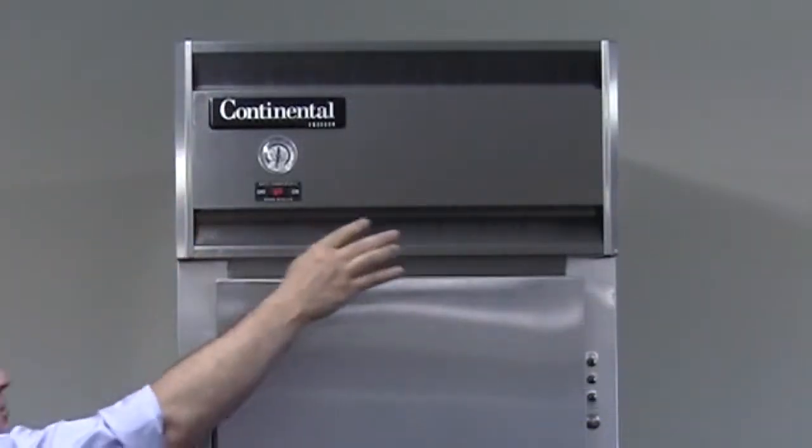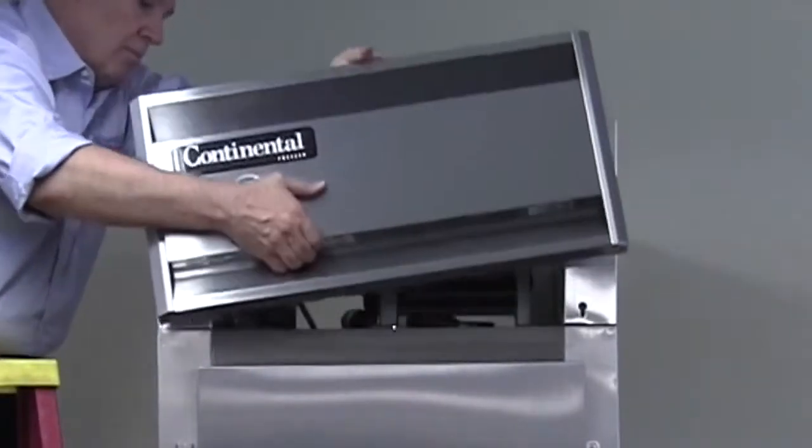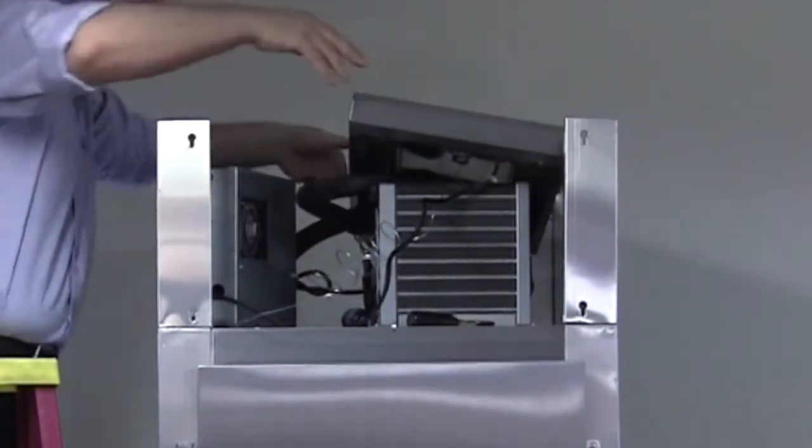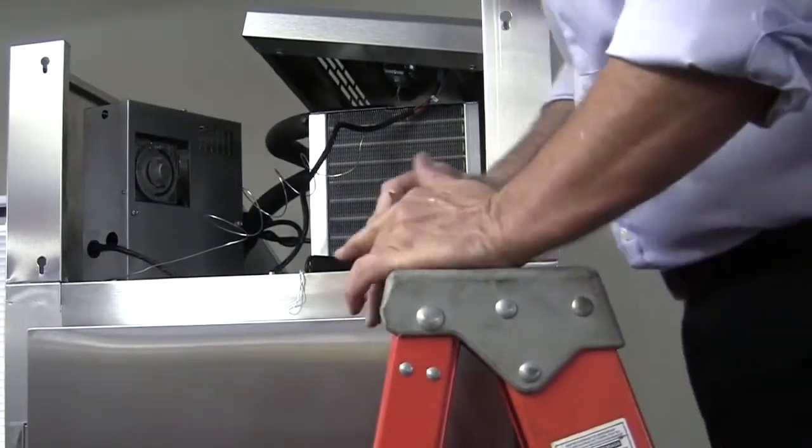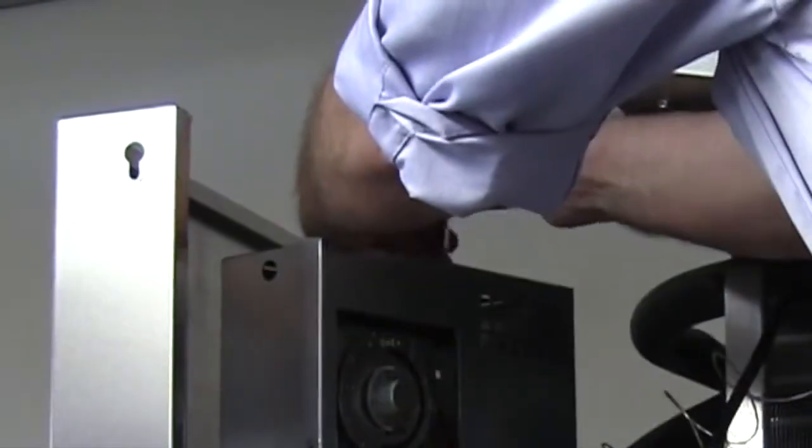Locate the four Phillips screws behind the front grill. Take the small Phillips screwdriver, loosen and lift out of the keyhole slots, and set the grill to the side. Remove the three screws from the control box cover, remove the cover, and set to the side.